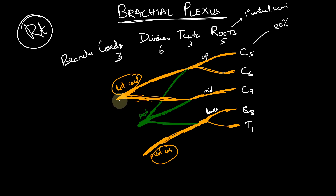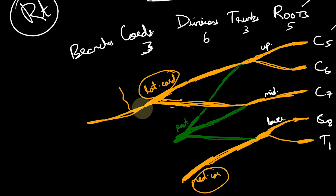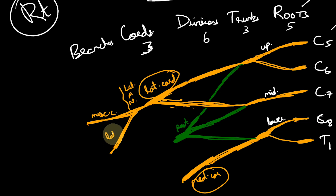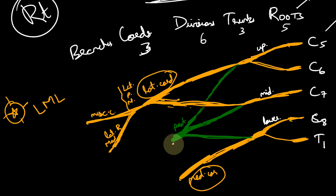From the lateral cord, the branches are the lateral pectoral nerve, the musculocutaneous nerve, and the lateral root of the median nerve. These three can be remembered with the mnemonic LML — Lateral pectoral nerve, Musculocutaneous nerve, and Lateral root of median nerve.